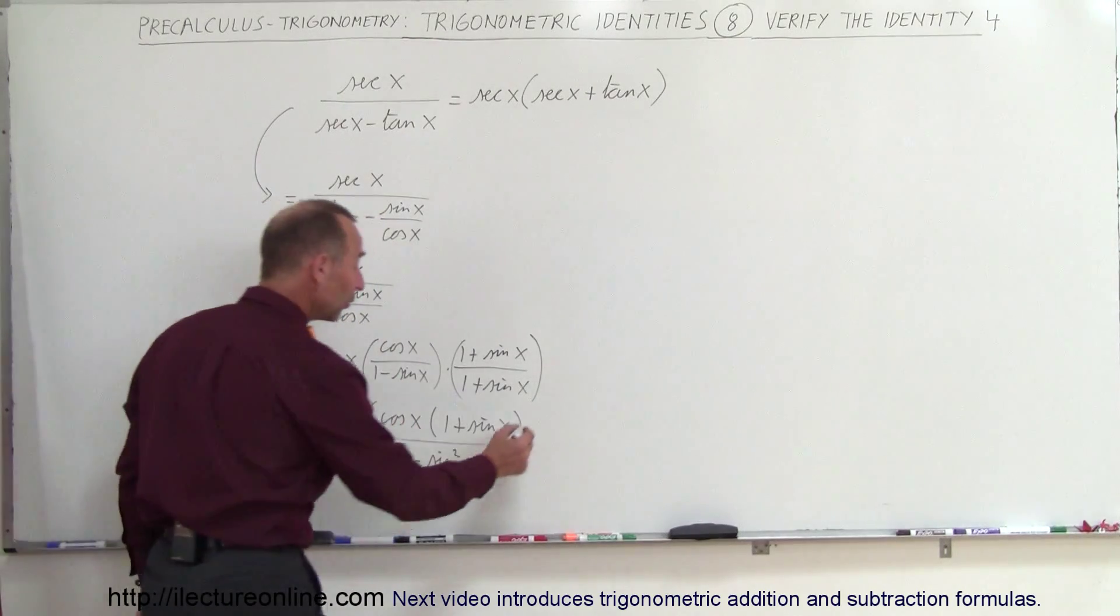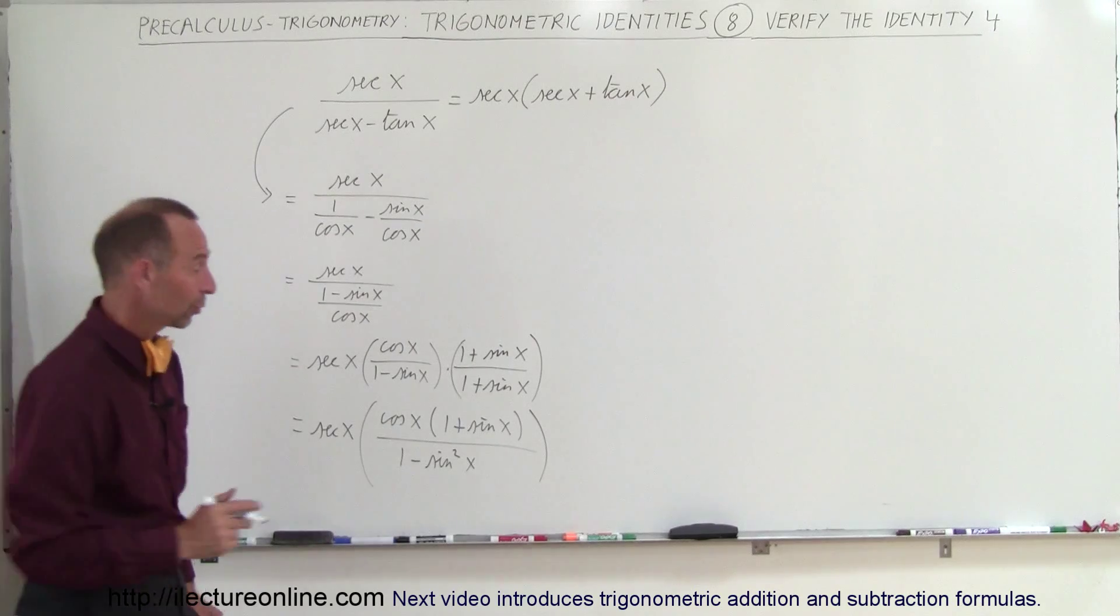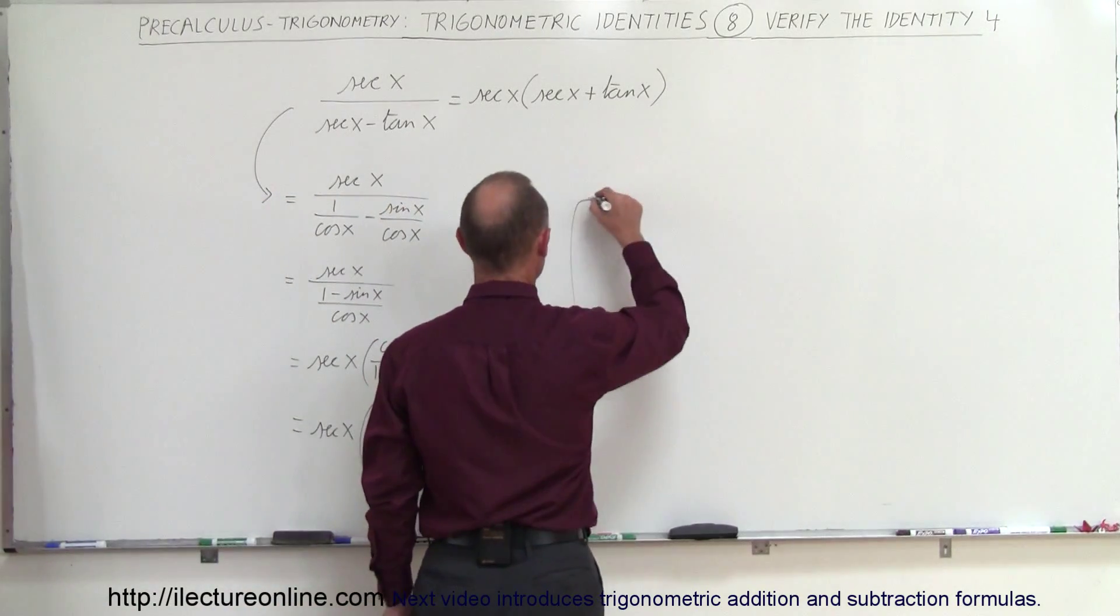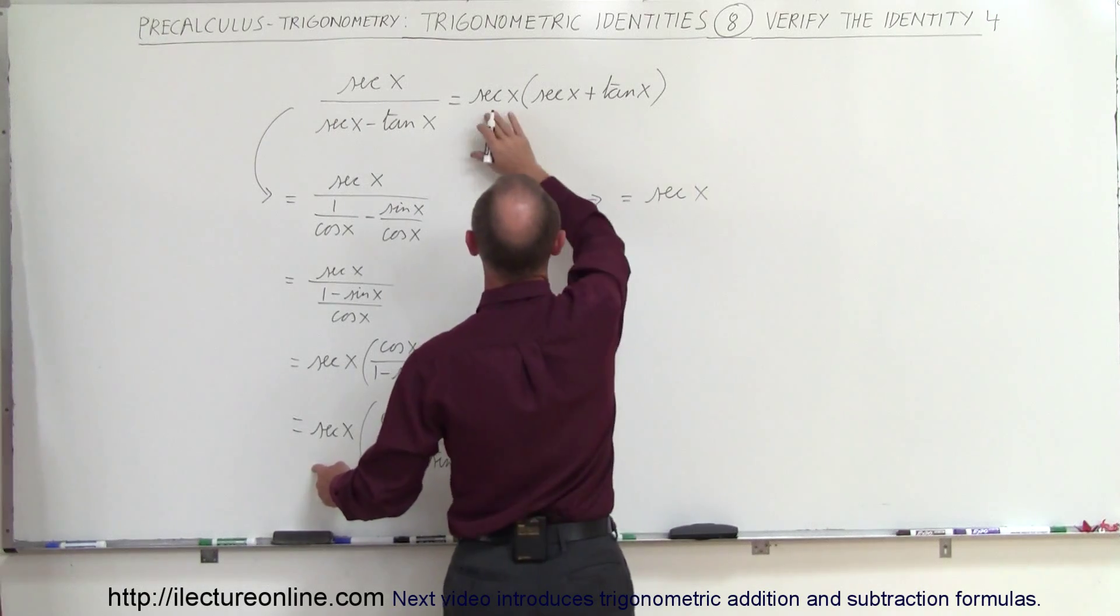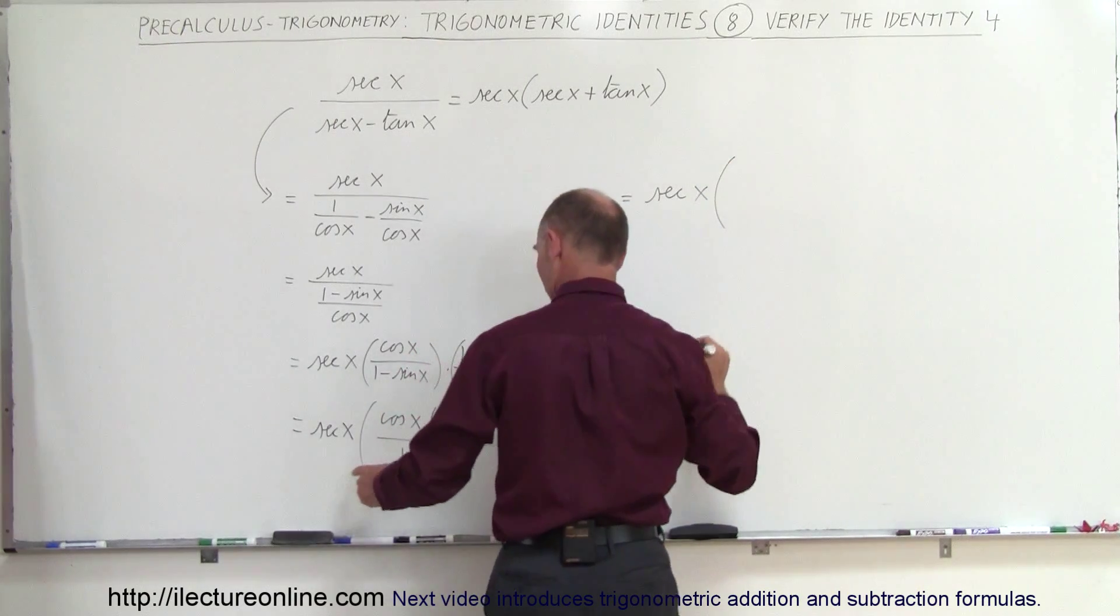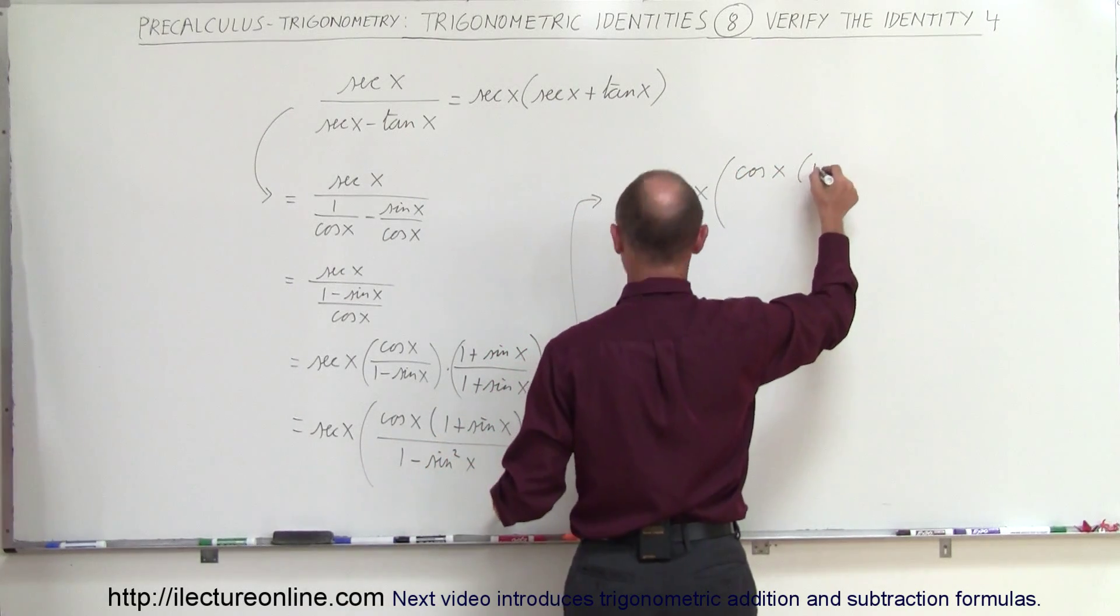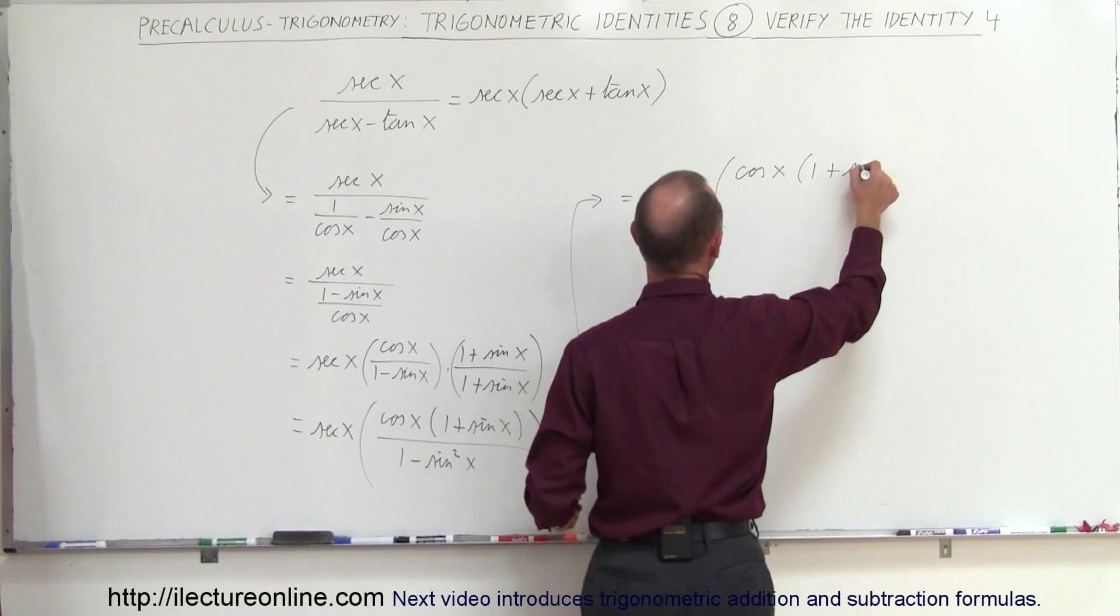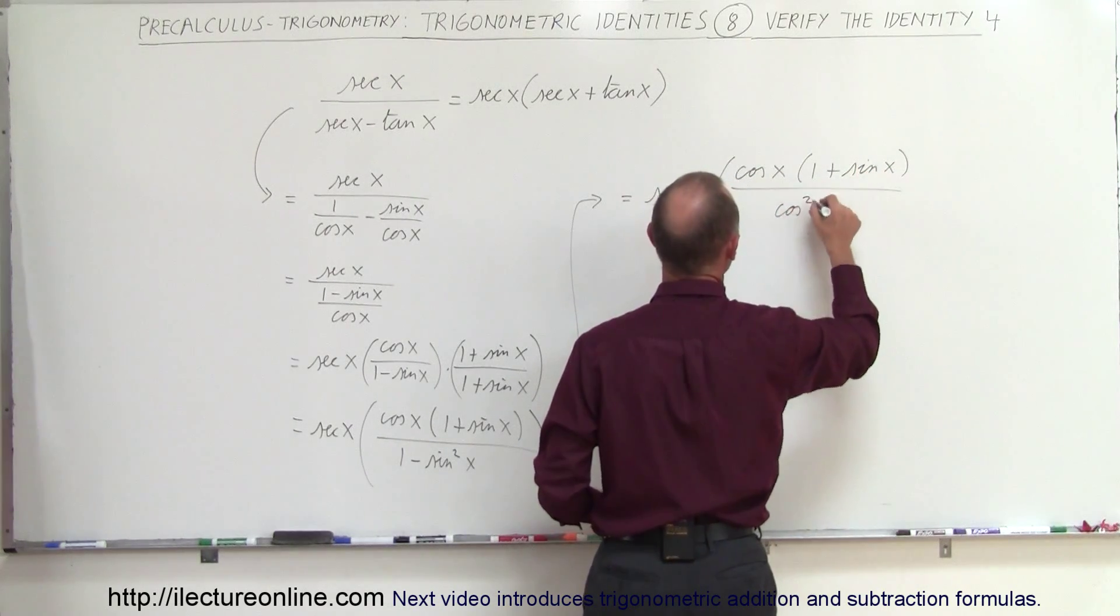Now the reason why we did that is because 1 minus the sine squared of x actually can be written as the cosine squared of x. So this can be written as the secant of x, I still have my secant of x over there, times the quantity, the cosine of x times 1 plus the sine of x, all divided by the cosine squared of x.